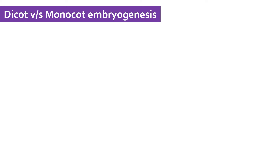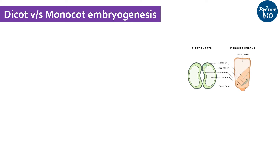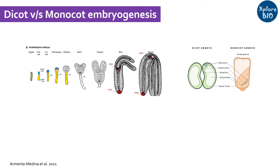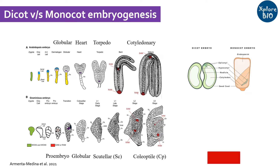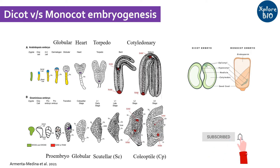Embryogenesis, or embryo development, involves a series of stages that differs in dicots and monocots. As you can see in this picture, dicot embryogenesis involves globular, heart-shaped, torpedo, and cotyledonary stages. Whereas in the case of monocots, it involves proembryo, globular, scutellar, and coleoptile stages. The process has to be different as monocots have only one cotyledon and dicots have two.